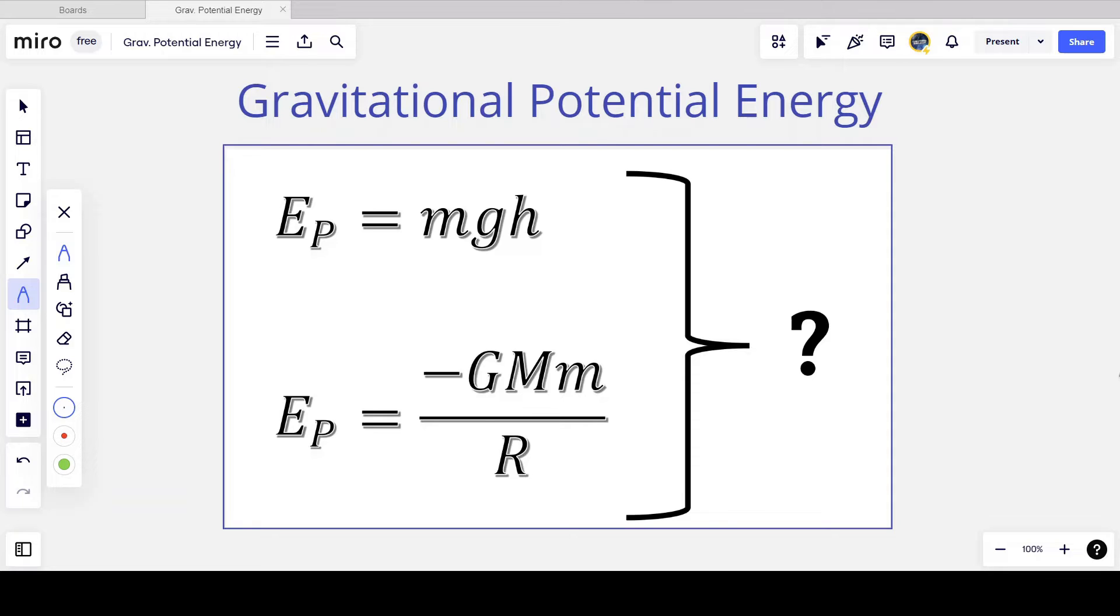Now, if you are new to physics, you may have learned that gravitational potential energy, which we represent by Ep, is equal to mgh. But further on in your physics journey, maybe your second year of A-levels or at university, you'll learn that gravitational potential energy is given by the equation minus GMm over r. So we're going to discuss each of these equations and try to find a limit in which these two equations actually look the same. We're going to show that, indeed, although they look different, we can find a situation in which these two equations are the same.